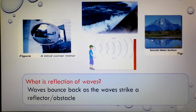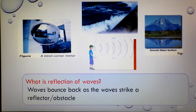A person can hear an echo when a sound wave hits a hard surface and bounces back. Or you can observe an image on a smooth water surface due to light waves bouncing back. So we can define reflected waves as waves that bounce back when they strike a reflector or obstacle.